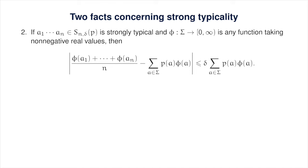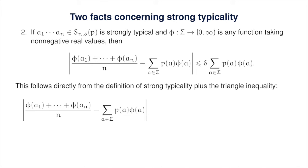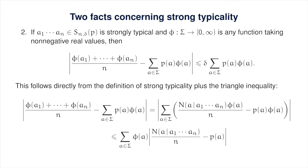For the second fact, which bounds the difference between the average value of a function over the symbols in a strongly typical string versus the average value with respect to the probability vector p, the proof is quite straightforward. The average value of the function over the symbols in the string is determined by the number of times each symbol appears, and we apply the triangle inequality. Here is where the assumption that phi only takes non-negative values is used — the bound doesn't hold when phi of a can take negative values. Finally, the definition of strong typicality is applied and we obtain the required bound.